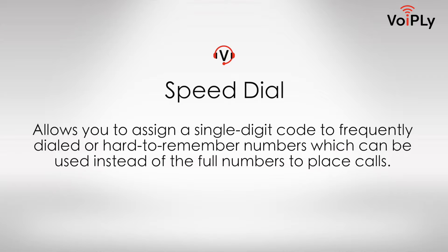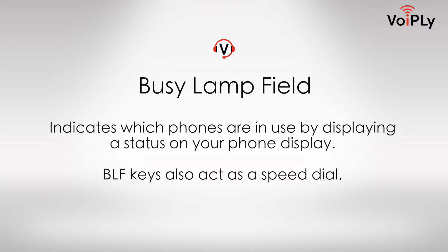Speed dial allows you to assign a single digit code to frequently dialed or hard to remember numbers, which can be used instead of the full numbers to place calls. Busy lamp field indicates which phones are in use by displaying a status on your phone display. BLF keys also act as a speed dial.